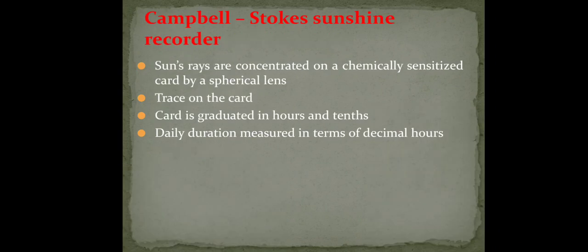How to measure sunshine? There is an instrument called Campbell's Stokes Sunshine Recorder, and this is the instrument used to measure sunshine. The principle is very simple — in earlier days you may have used a converging lens and paper, sitting in an open area, converging all the light into the paper until the paper starts burning.